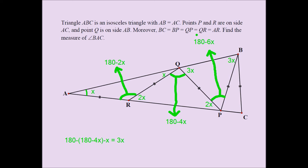If this is 180 minus 6X and this is 2X, we can easily find this one. You can actually see a pattern: X, X, 2X, 2X, 3X, 3X — it will probably be 4X, 4X. This angle is going to be 180 minus 6X minus 2X, which turns out to be 4X. And because triangle BPC is isosceles, this angle has to be 4X as well.